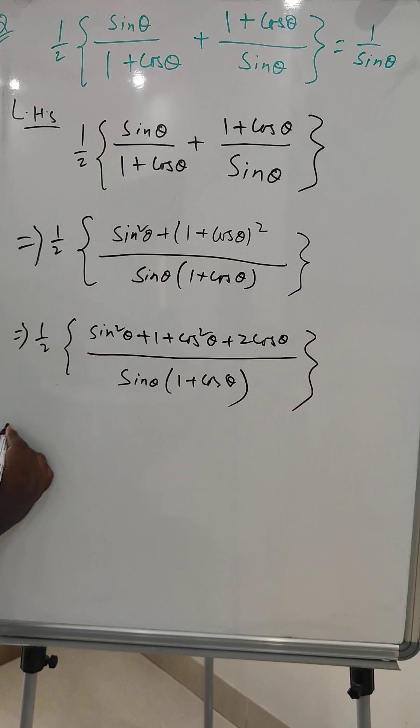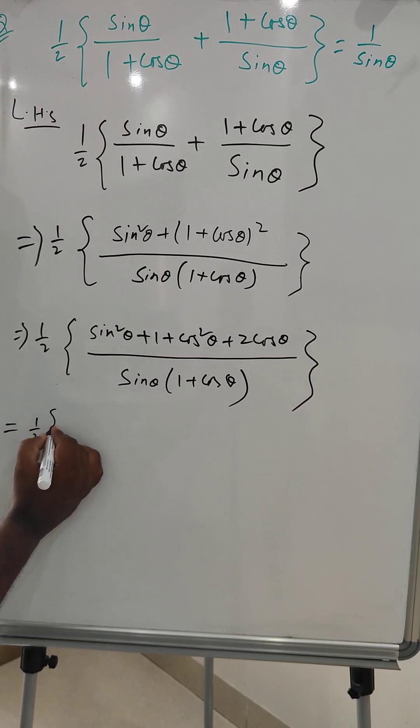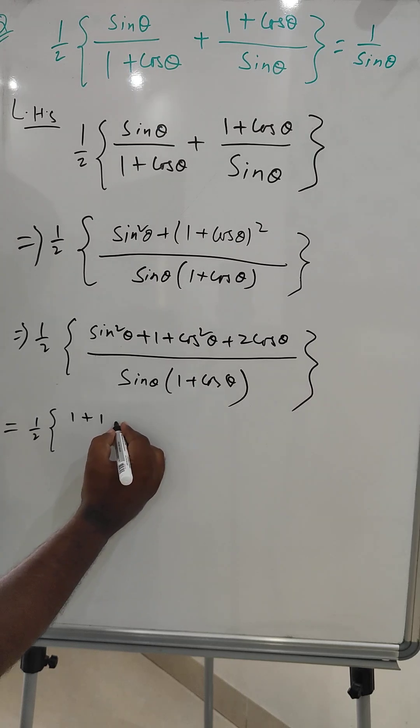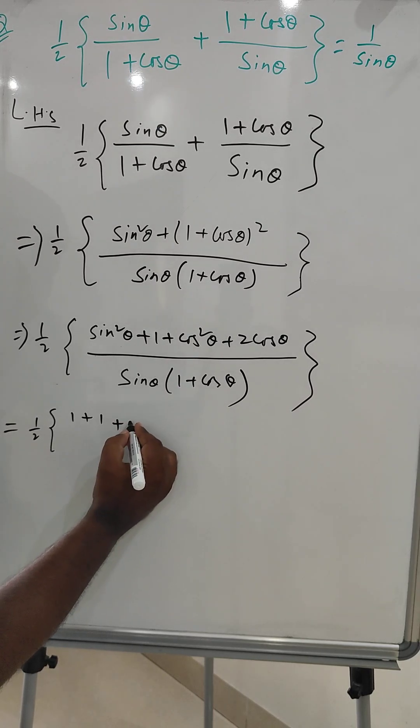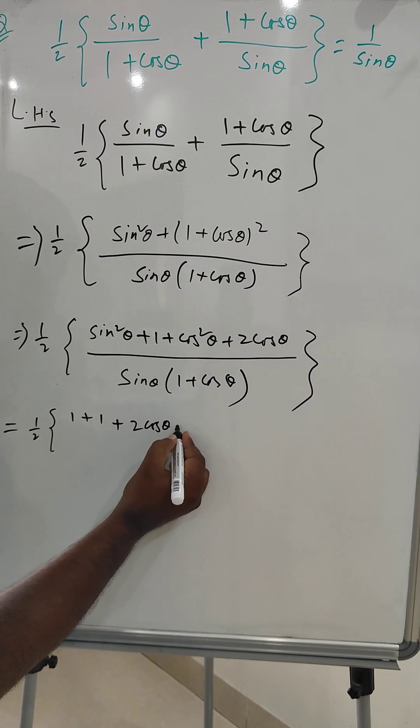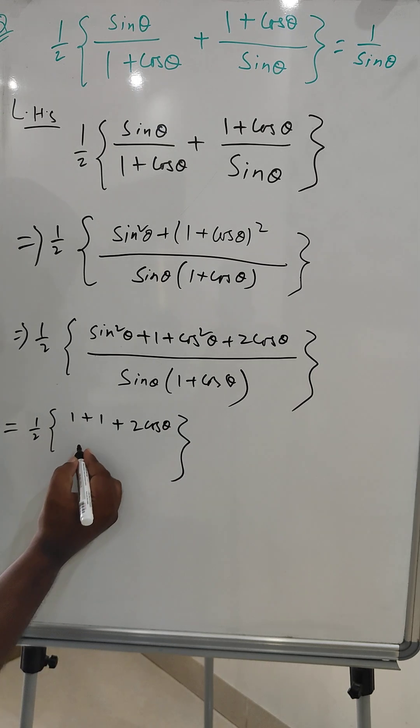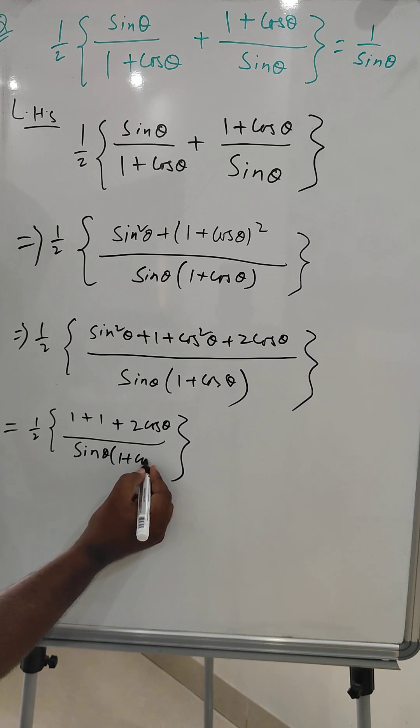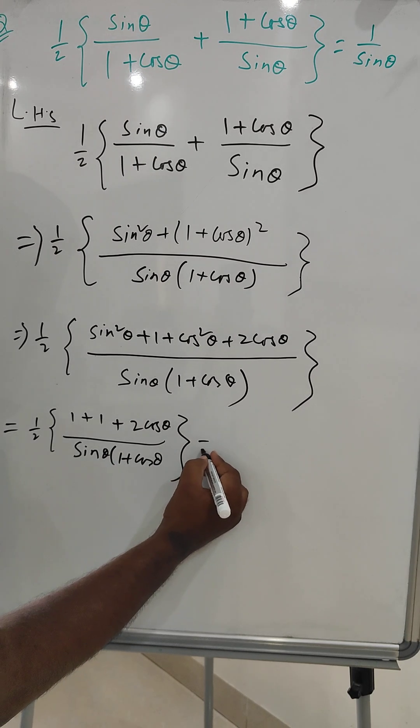Here we can write 1/2 times [1 plus 1 plus 2 cos theta] over [sine theta (1 + cos theta)], which can be written as 1/2 times [2(1 + cos theta)] over [sine theta (1 + cos theta)].